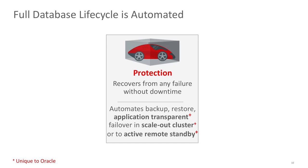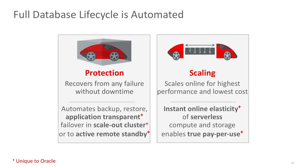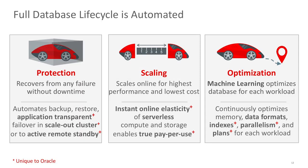The Autonomous Database recovers from any failure without any downtime to your application. The other feature is Elastic Scalability, which allows you to increase or decrease resources that you are dedicating to your database, enabling you to truly pay-per-use. Finally, machine learning algorithms run behind the scenes and optimize your database for your specific workload.